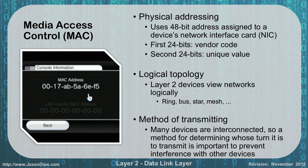For our logical topology, Layer 2 devices view our networks logically, whether they are a ring, a bus, a star, or a mesh. Our logical topology doesn't have to match our physical topology. So even though we're using a physical star, we can use a logical ring on top of it — it's how data is flowing on the network itself.